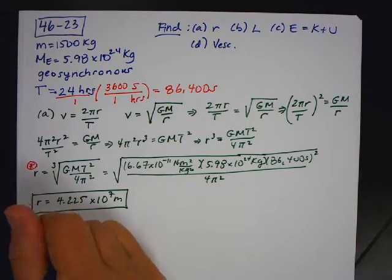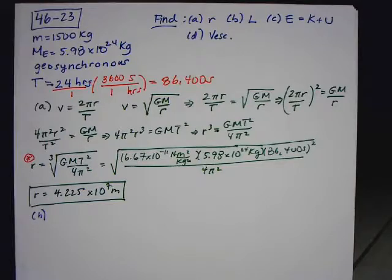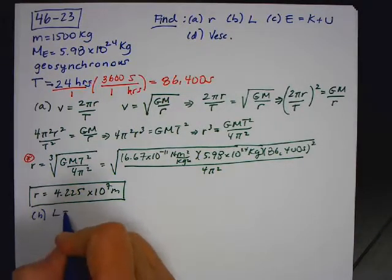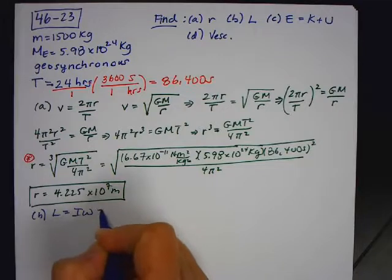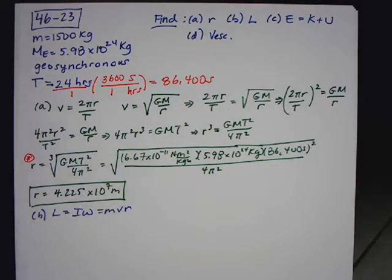So part B says define angular momentum. So when I read that, I'm going to say two things to myself. What is angular momentum? Angular momentum is equal to Iω, but it's also equal to mvR. And remember, going around in either circular orbit like this or even elliptical orbit, we know that angular momentum is conserved.